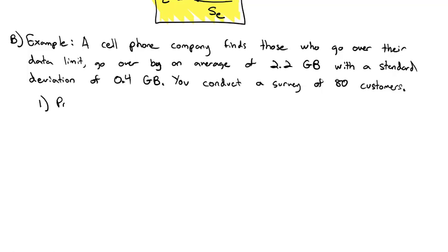You conduct a survey of 80 customers. First thing we want to know is what's the probability the average overage is above 2.3 gigabytes. Or what's the probability that x bar is greater than 2.3, that the average is more than 2.3.